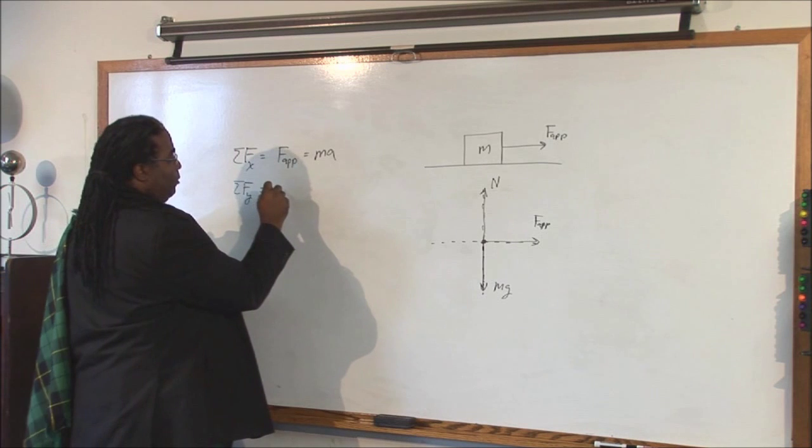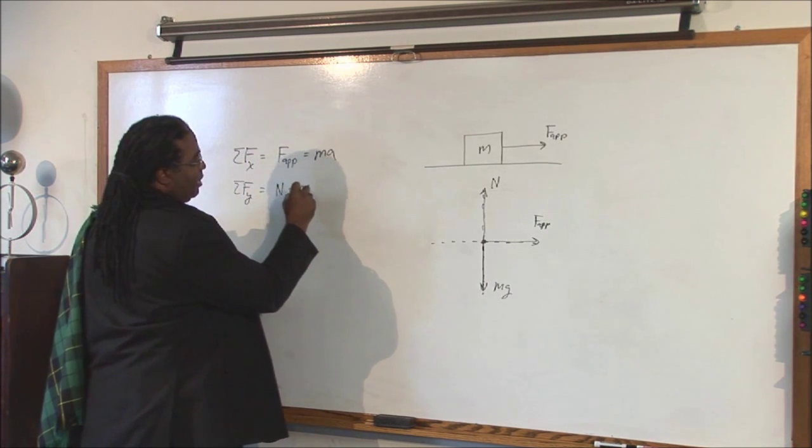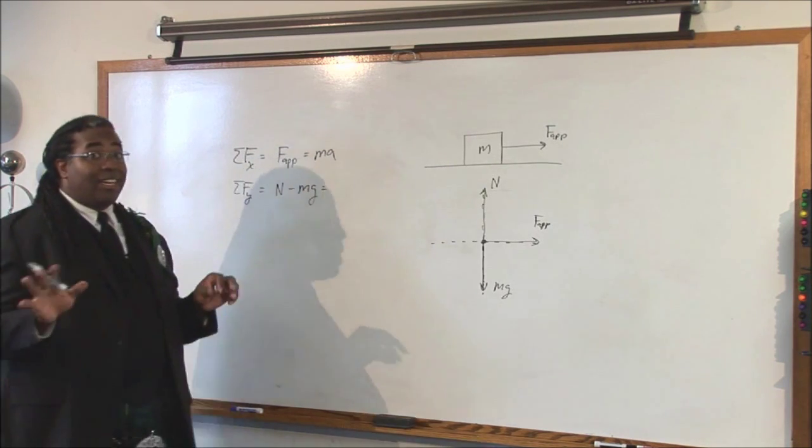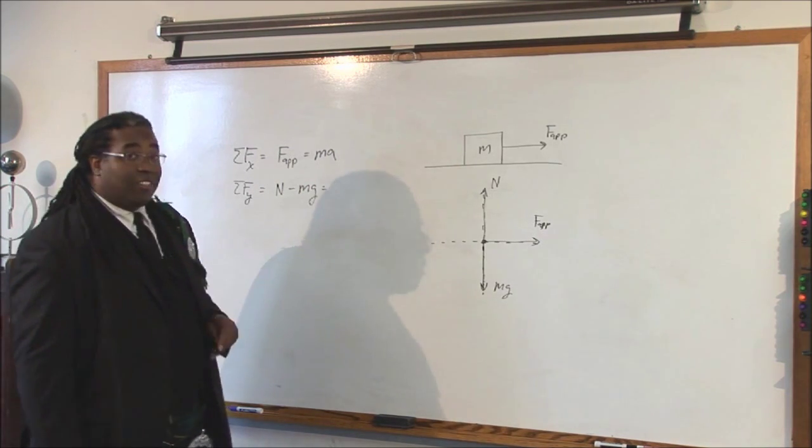So, normal force minus mg equals, now, it does equal ma. But, here's the thing. If it's sitting on a surface, and it's not jumping off the surface, or falling through the surface, then it's always zero.